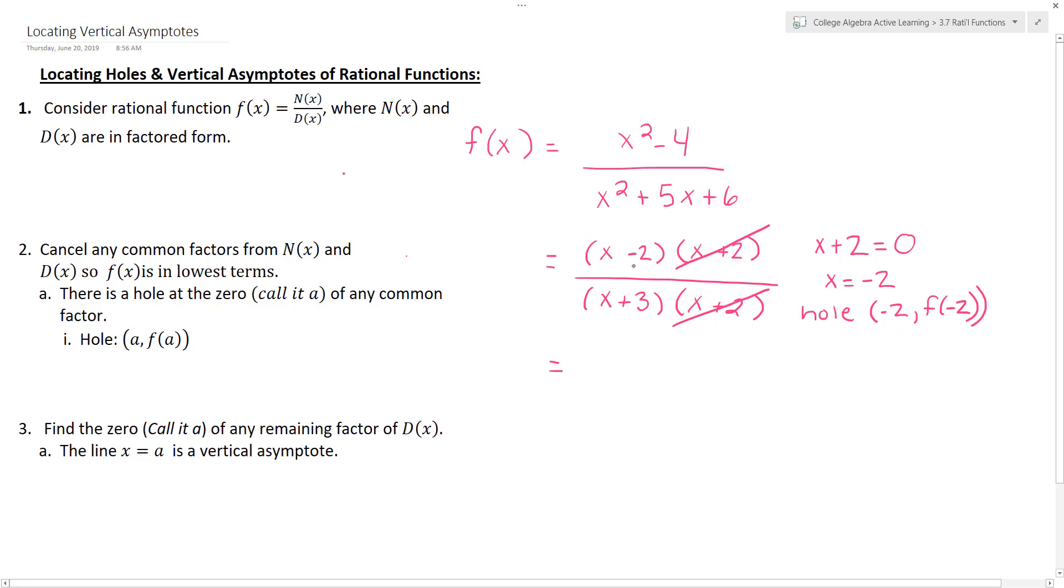In order to do that, we want to write our function in lowest terms first. So we go ahead and do that and we're left with x minus 2 over x plus 3.